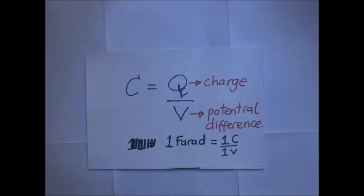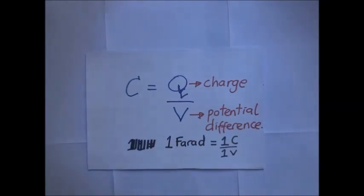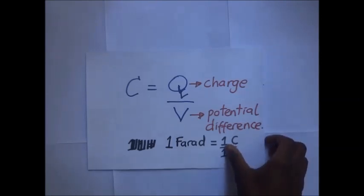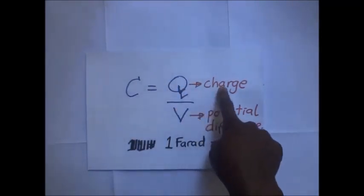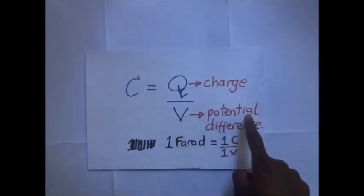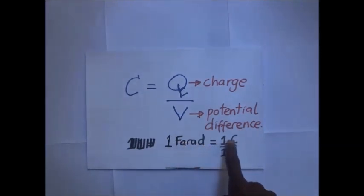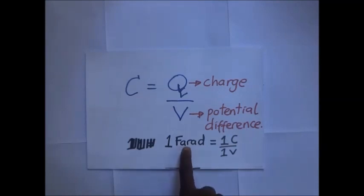By definition, capacitance is the ratio of the magnitude of the charge on either plate of the capacitor, or: capacitance is the electrical property of a capacitor and is the measure of the capacitor's ability to store an electrical charge on its two plates. Q is measured in coulombs, voltage in volts, and the SI unit for capacitance is farads — one farad equals one coulomb per volt. One farad is the capacitance of a capacitor when charged with one coulomb with a potential difference of one volt across its plates.